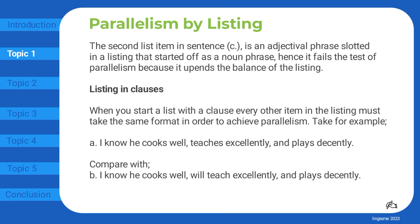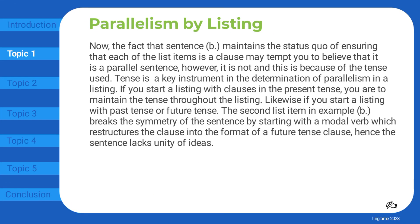Listing in clauses. When you start a list with a clause, every other item in the listing must take the same format in order to achieve parallelism. Take for example: I know he cooks well, teaches excellently, and plays decently. Compare with: I know he cooks well, will teach excellently, and plays decently. The fact that sentence B maintains the status quo of ensuring that each list item is a clause may tempt you to believe that it is a parallel sentence; however, it is not, and this is because of the tense used. Tense is a key instrument in the determination of parallelism in a listing. If you start a listing with clauses in the present tense, you are to maintain the tense throughout the listing — likewise if you start with past tense or future tense. The second list item in example B breaks the symmetry by starting with a modal verb, restructuring the clause into a future tense clause, hence the sentence lacks unity of ideas.